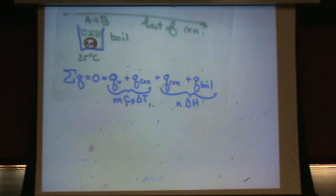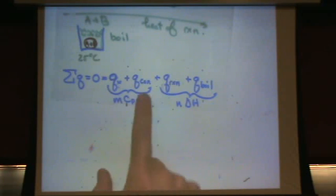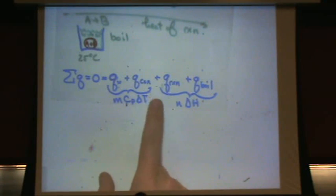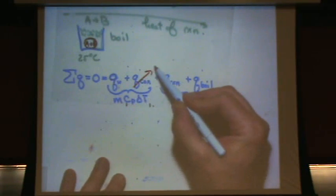Now, for the Q of the container, here's what you want to look for. If the problem gives you the heat capacity of the container, you keep this term. If it does not give you the specific heat or heat capacity, you assume it's zero.